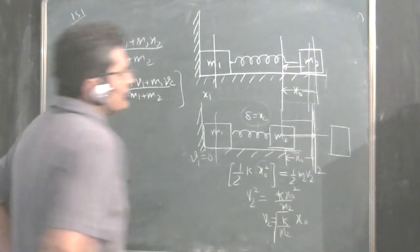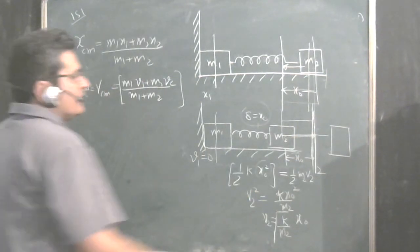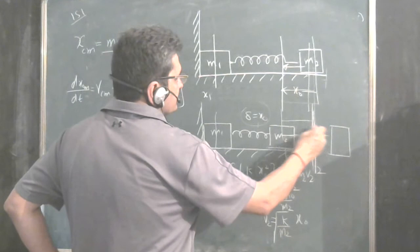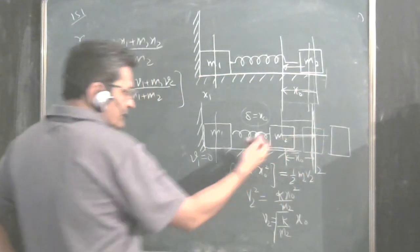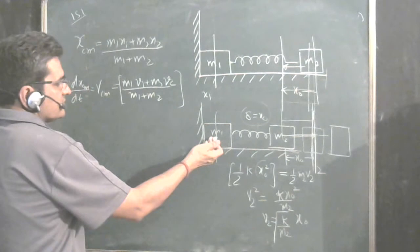Now at this point in the problem, as we know, as I have explained, till this time body is at the mean position, this side or at the mean position, V1 is 0.